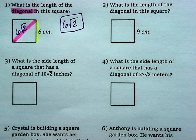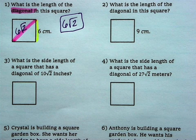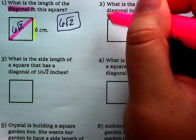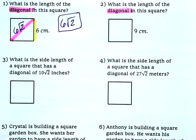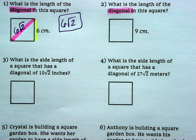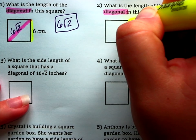Alright, so number 2 is very similar to that. They want you to figure out the length of the diagonal, where the side length is 9.